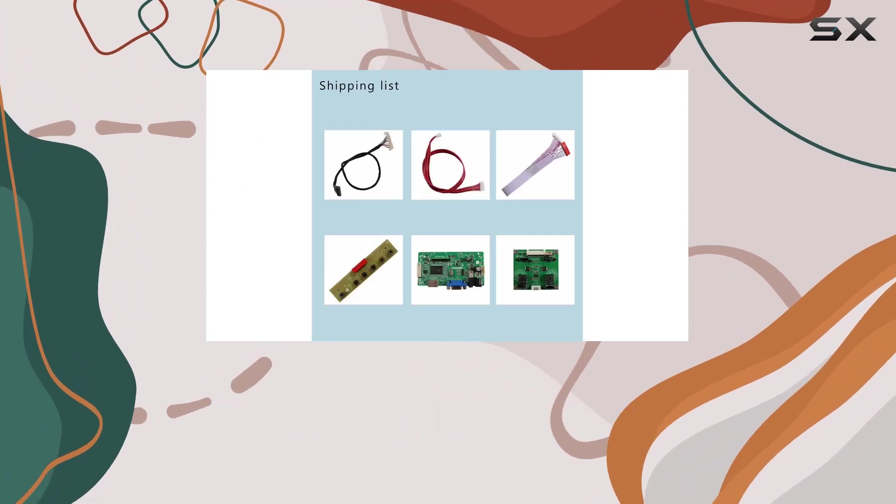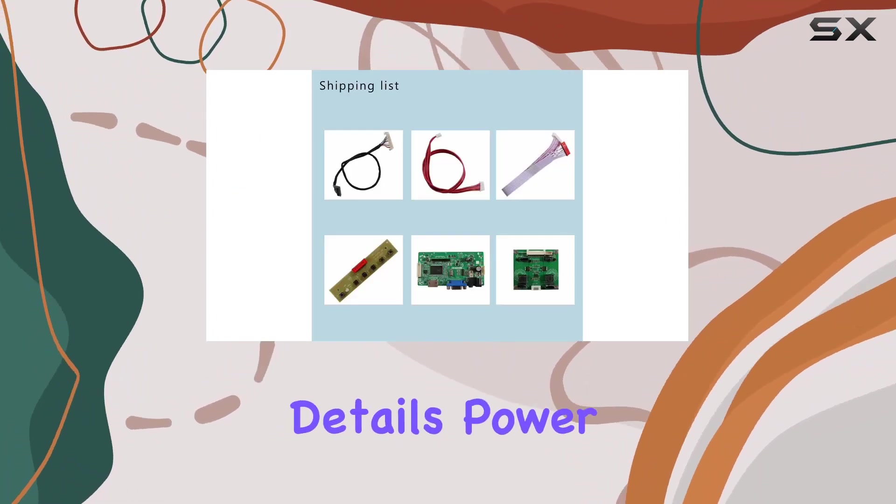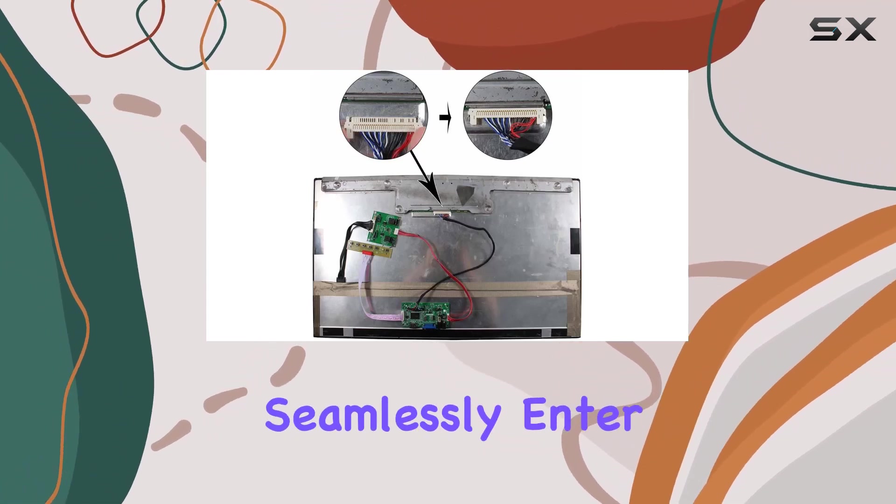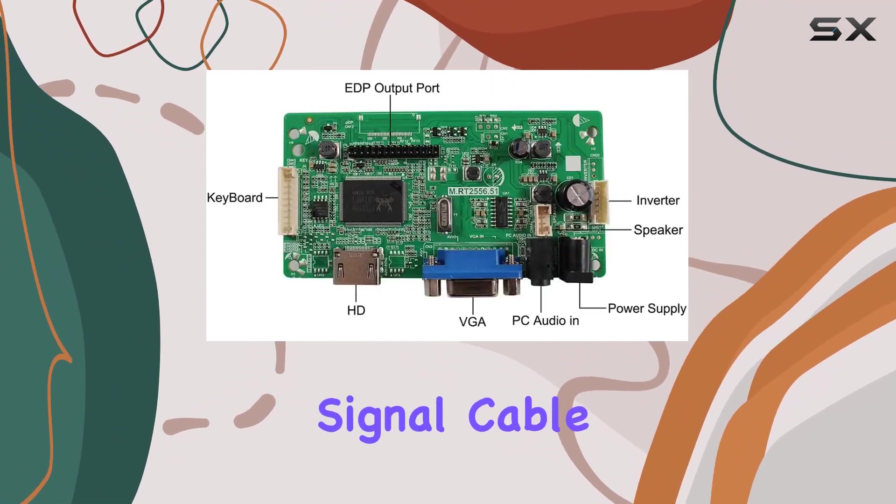Connect the cables according to the provided link picture details, power on, and observe the keyboard LED light turning green. After that, you can seamlessly enter the HDMI VGA signal cable.